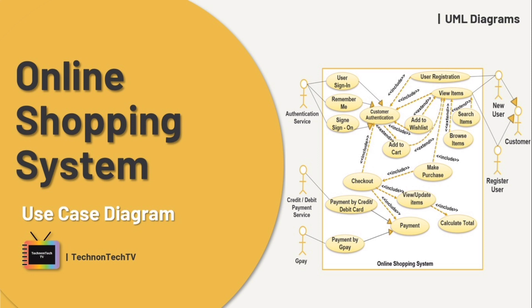It is basically a way to show how shoppers and the online shopping system interact with each other. It shows how the system is put together and how it works, explaining the system's support structure and behaviors. The purpose of a use case diagram in UML is to demonstrate the different ways a user might interact with the system and summarize the details of users and their interactions.